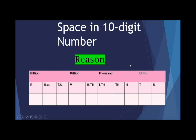Again, the reason we place a space after every three digits from the right is that every family has three members, and we place a space after every family.